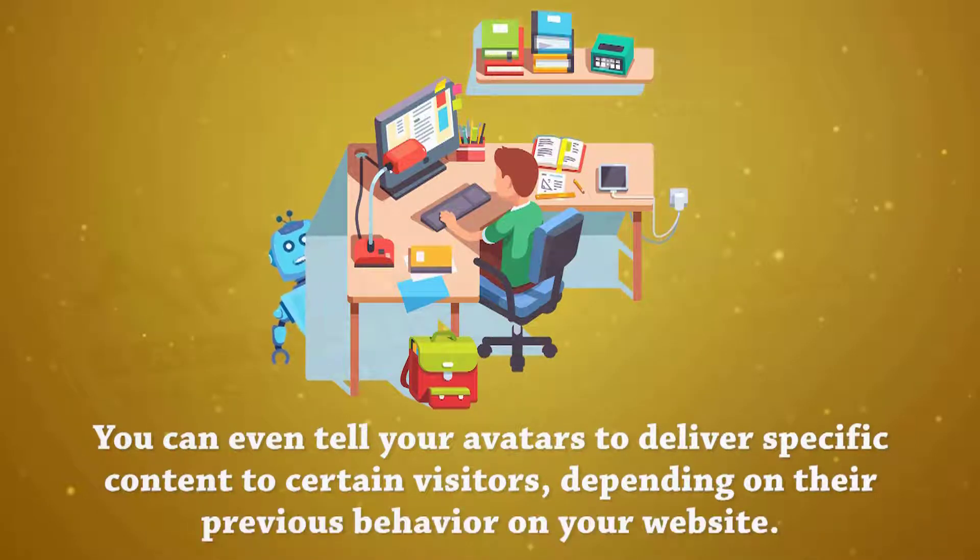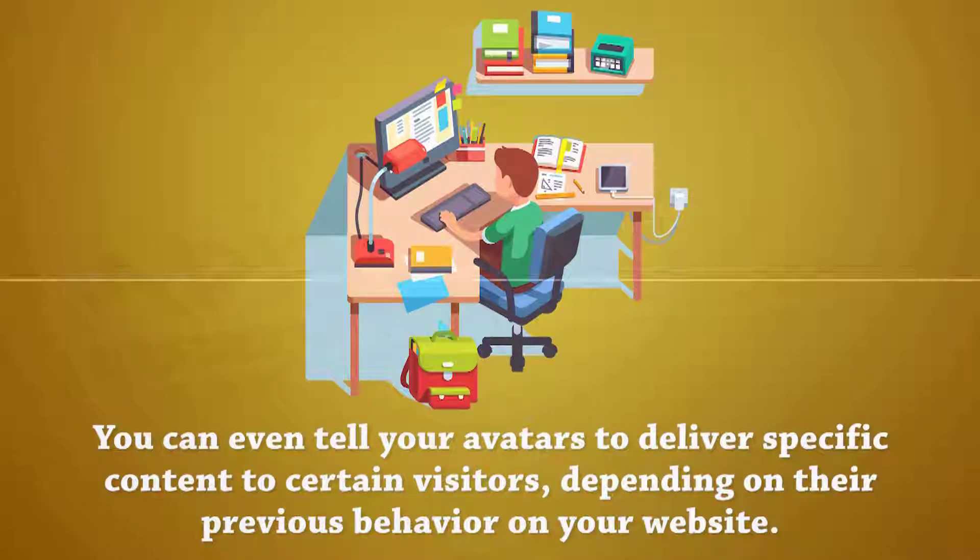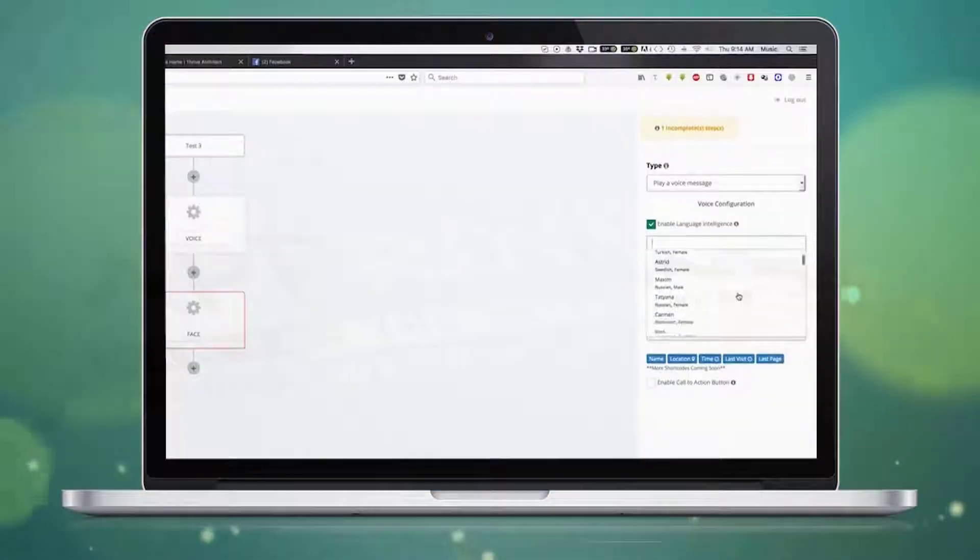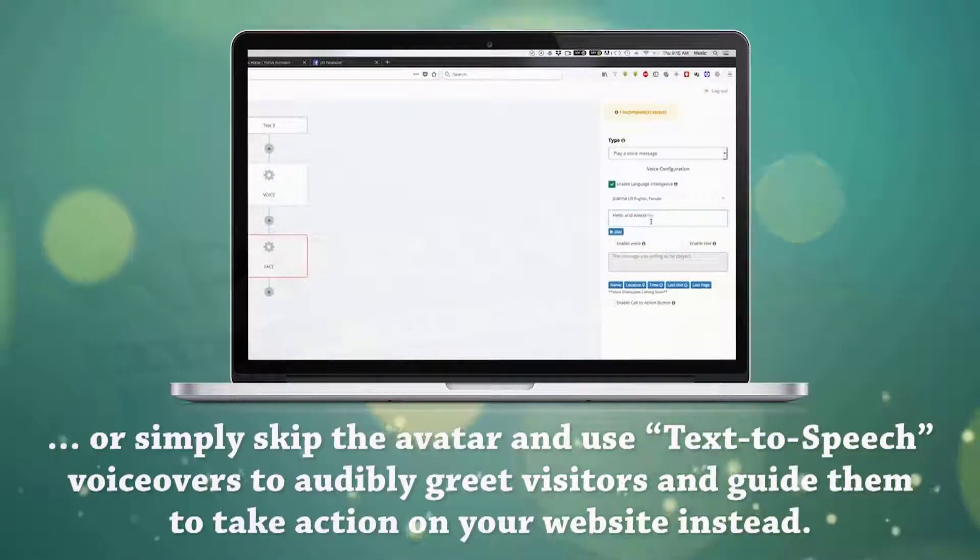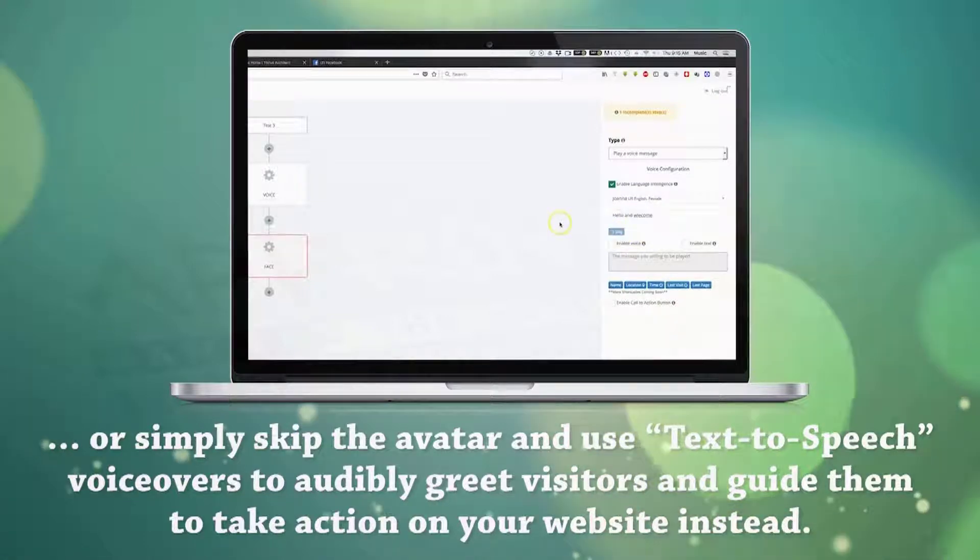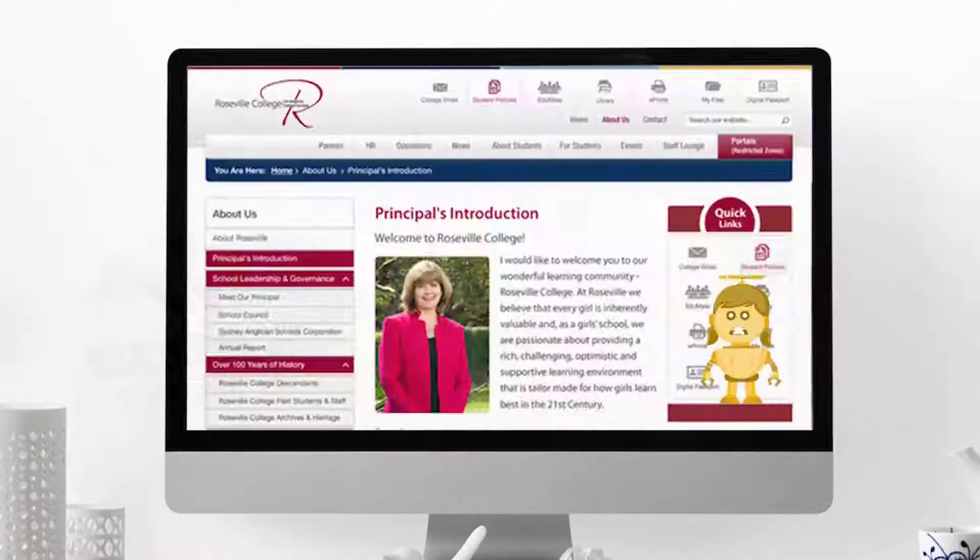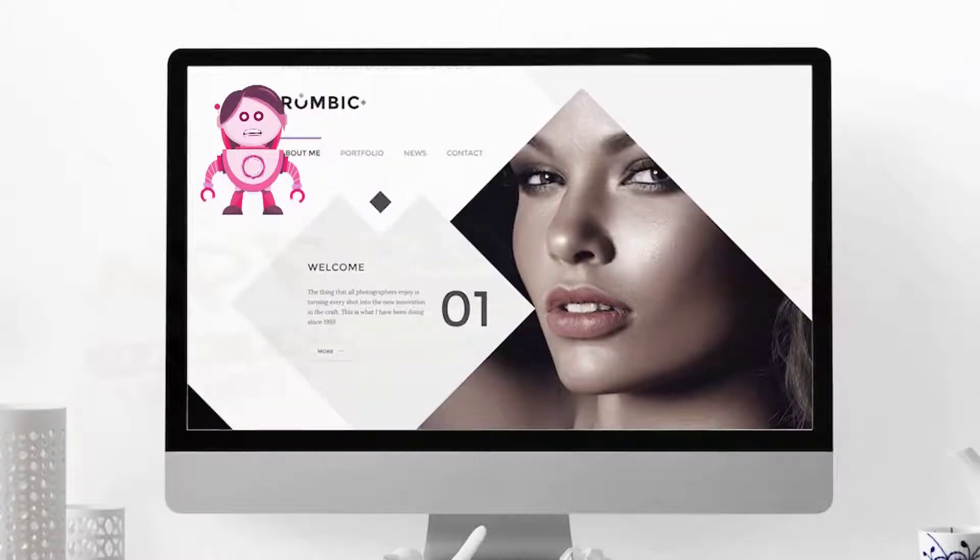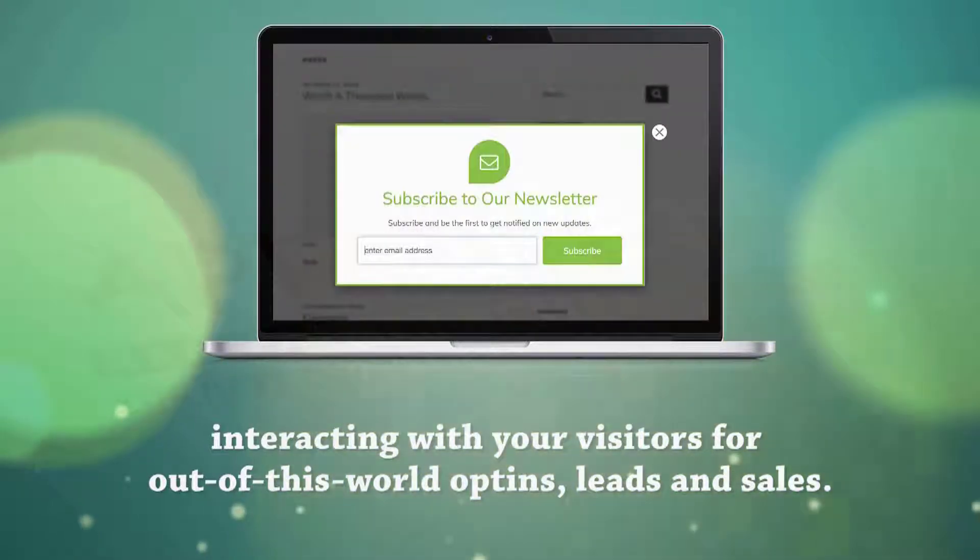You can even tell your avatars to deliver specific content to certain visitors, depending on their previous behavior on your website. Choose from male or female avatars, human or cute robot characters, 46 different accents, 4 realistic and smooth-sounding voices. Or simply skip the avatar and use text-to-speech voiceovers to audibly greet visitors and guide them to take action on your website instead. Want different video avatars on different pages of your site? You can do that too, with different avatars on your sales page, about page, blog, product pages, and even your checkout pages, interacting with your visitors for out-of-this-world opt-ins, leads, and sales.